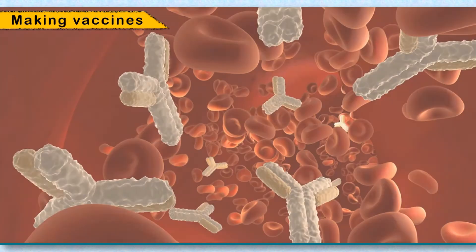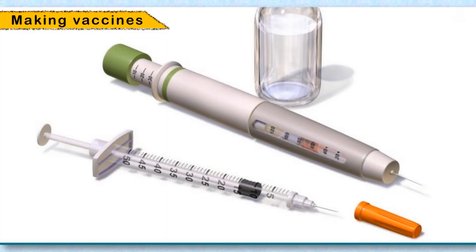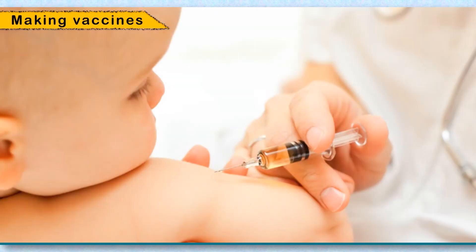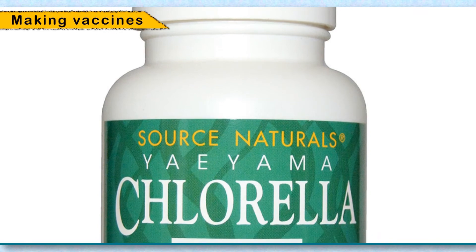Making vaccines: When disease-causing microbes attack our body, it starts producing substances called antibodies. These antibodies fight and destroy the microbes and remain in the body to fight future invasions. A vaccine is a preparation of killed or weakened disease-causing microbes. When introduced into a healthy person, it causes the body to produce antibodies that protect against future infections. Some microbes are also used as food supplements.